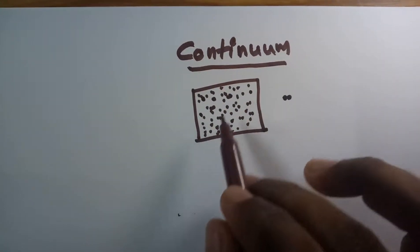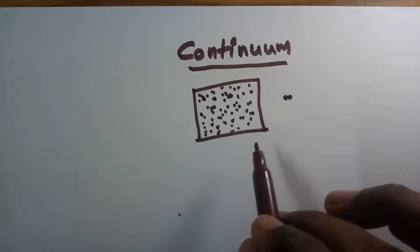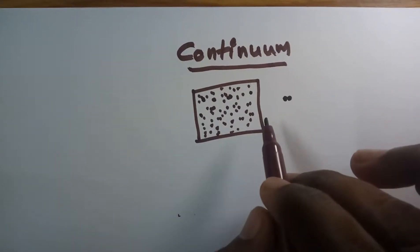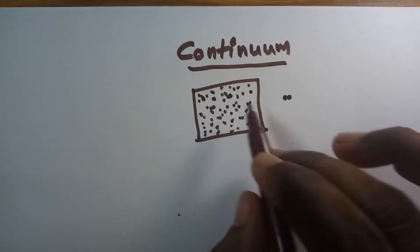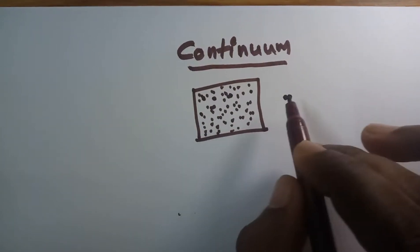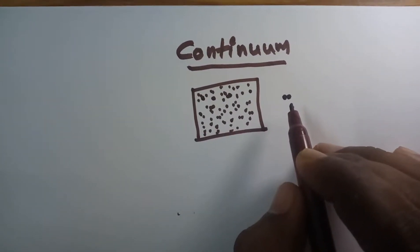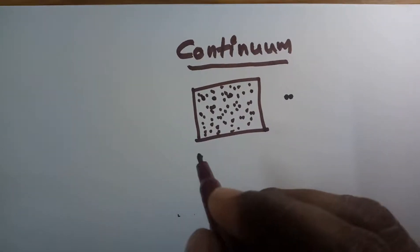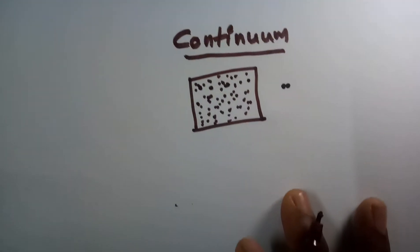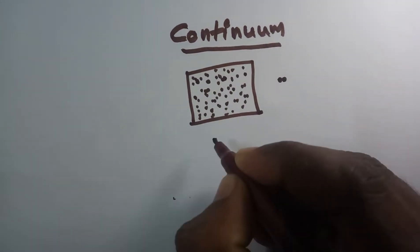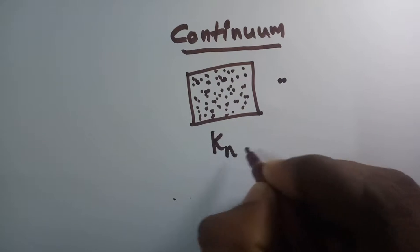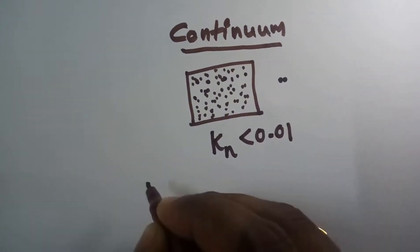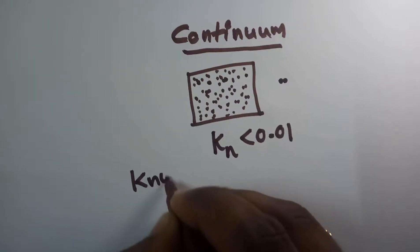This fluid consists of a number of molecules. If this fluid system is having a continuum, then the distance between the molecules is almost equal to zero or negligible. To achieve this state, the fluid system must have a Knudsen number less than 0.01. This is called the Knudsen number.